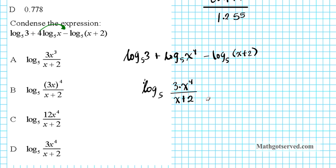So that's basically what our final answer is. Log base 5 of 3x to the 4th divided by x plus 2. And our final answer is option letter D.